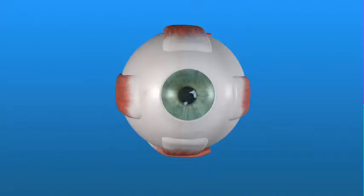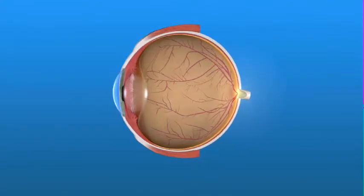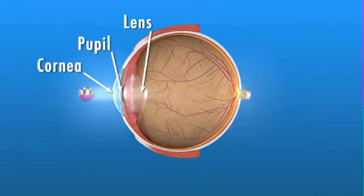First, to understand diabetic retinopathy and how it affects your vision, let's take a look at how the eye works. Light rays enter the eye through the cornea, pupil, and lens.